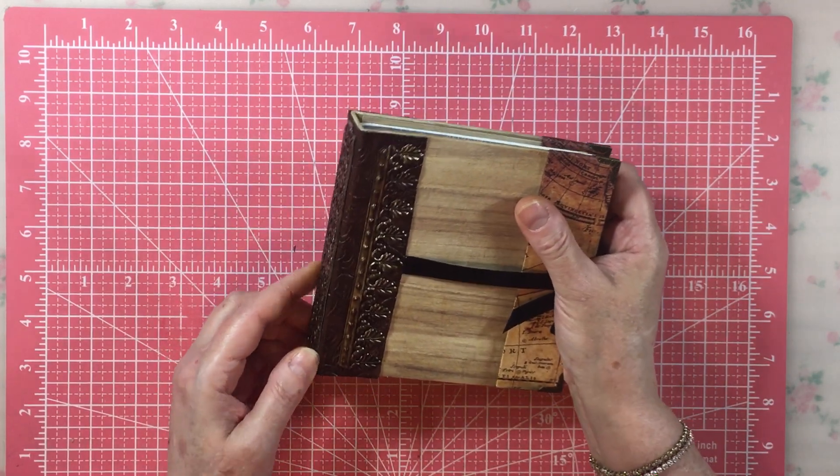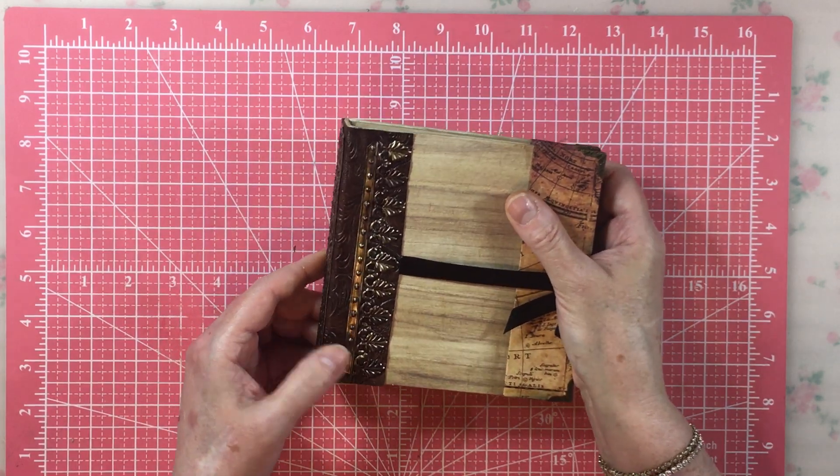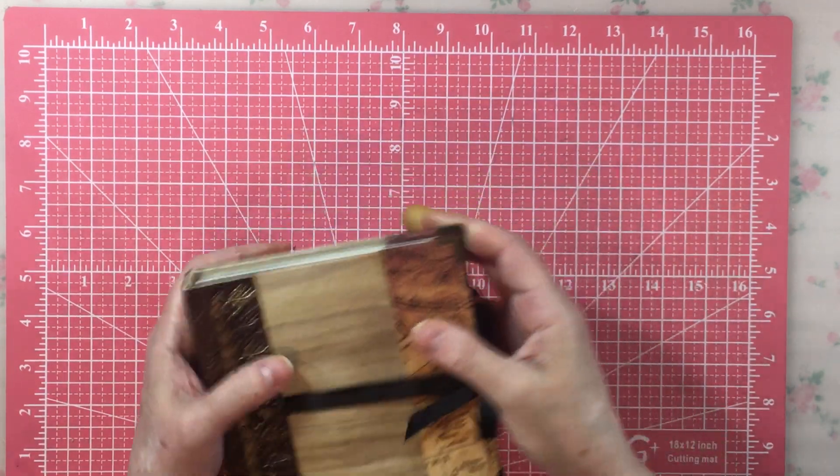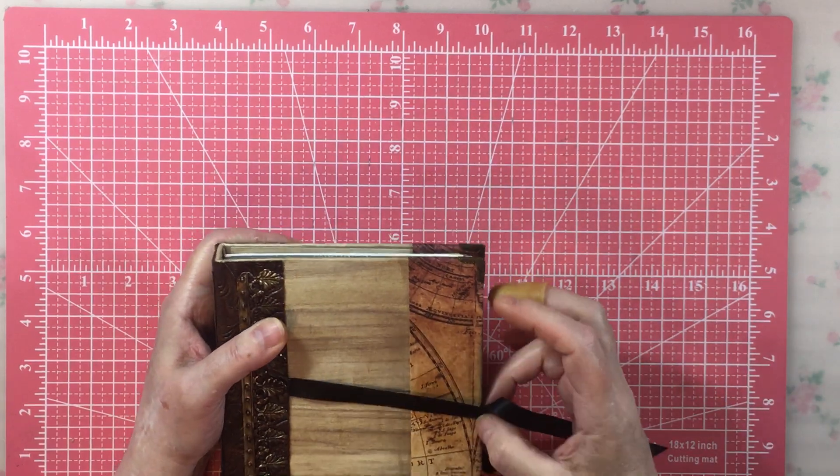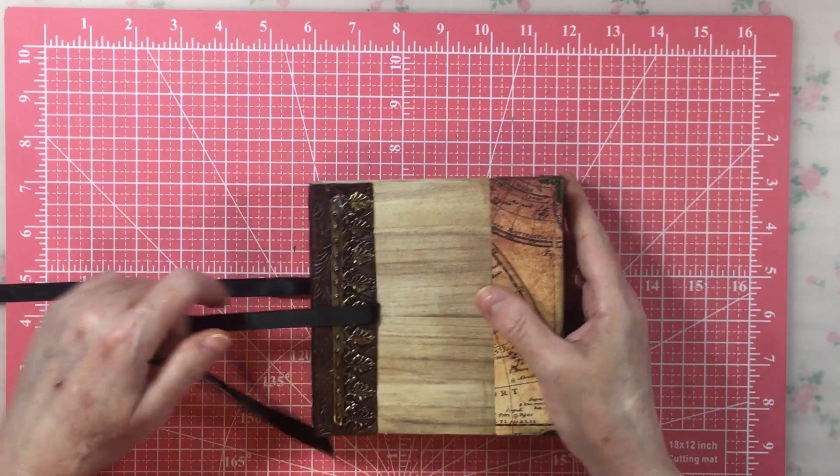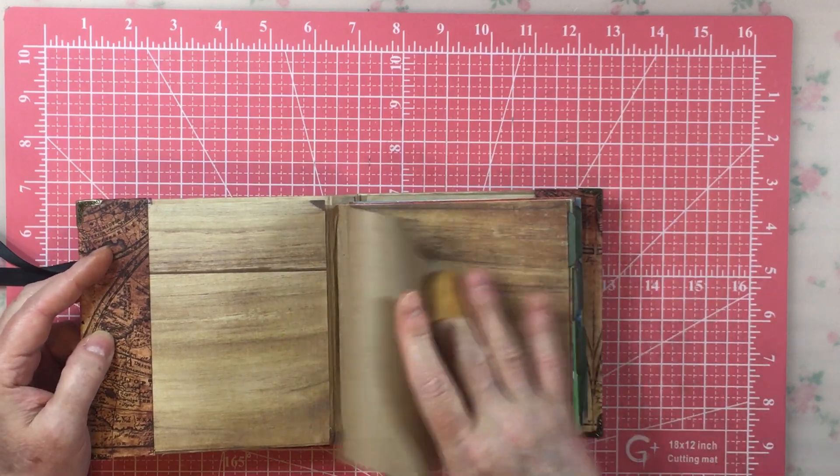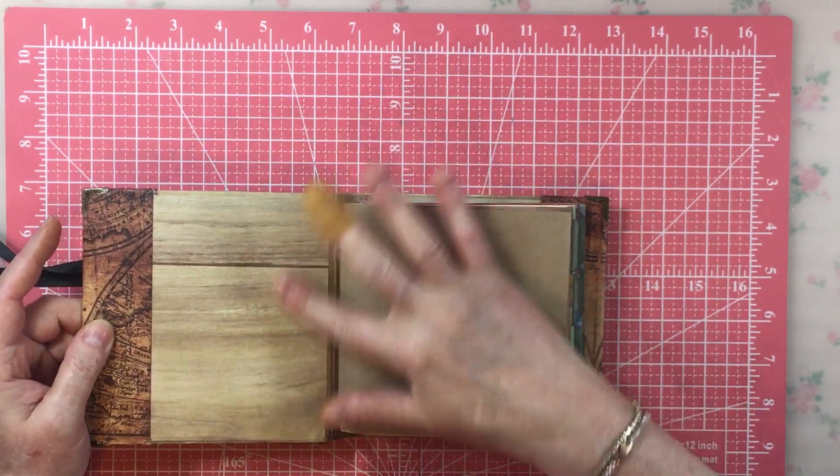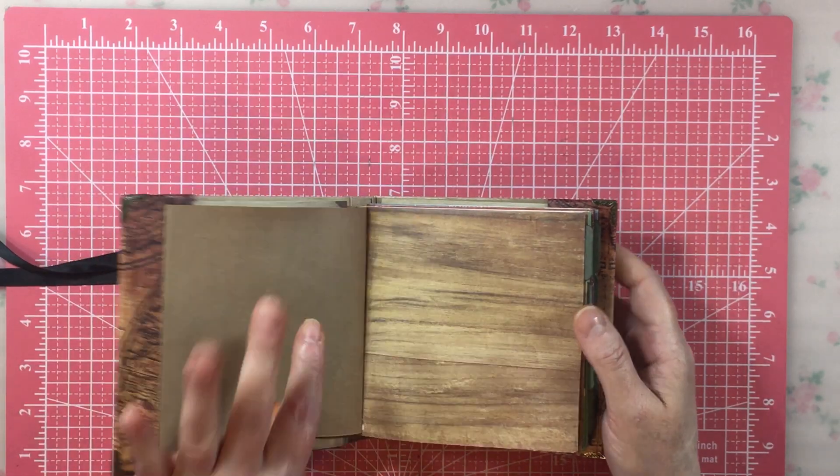And then before I attached it, I did roll these under so they weren't sharp. And I did put little corners on. And then I just glued this ribbon on. It's got a wood grain cover with this atlas. And then I used craft paper to bind it and then covered it with a piece of wood grain.